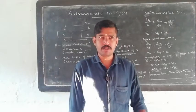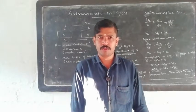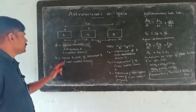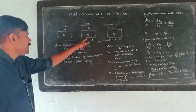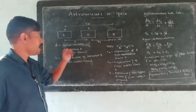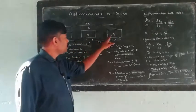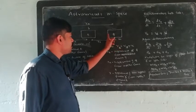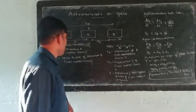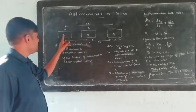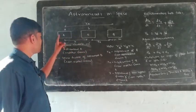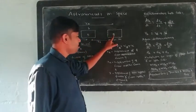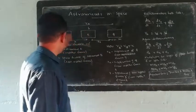Astronauts in space — example. We have three astronauts: A, B, and Q. Three astronauts, each of mass M. A and B are in different space shuttles.